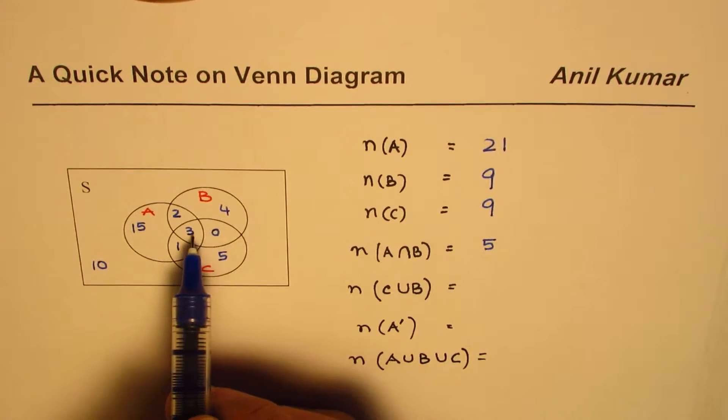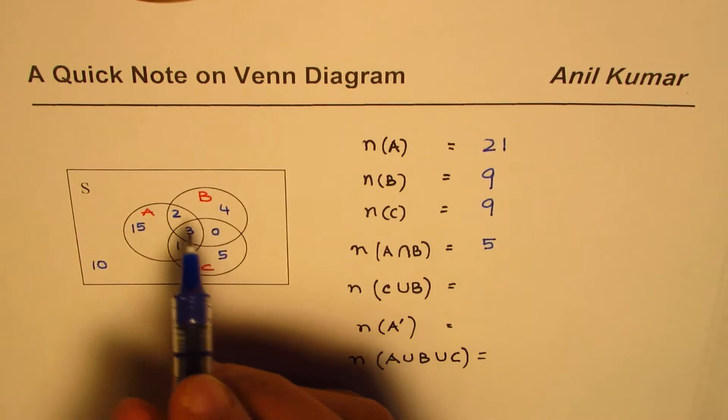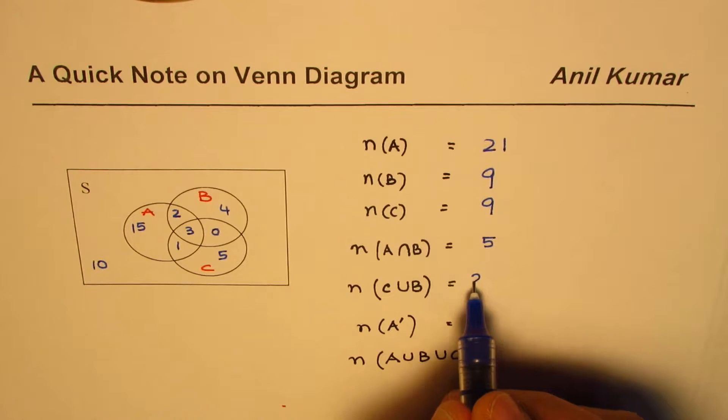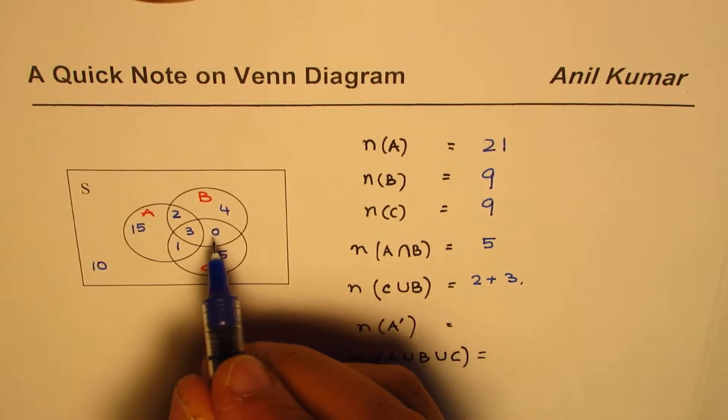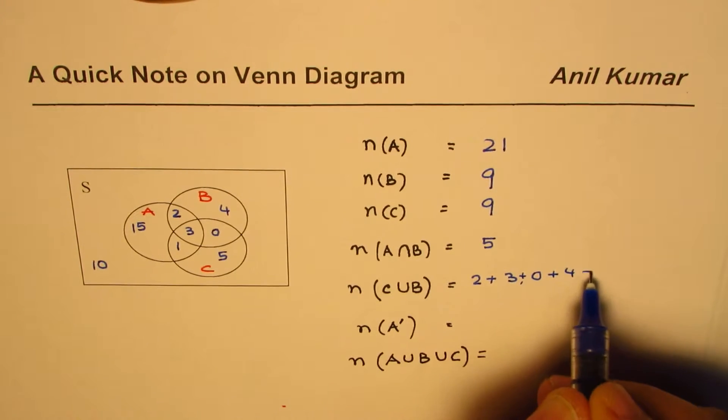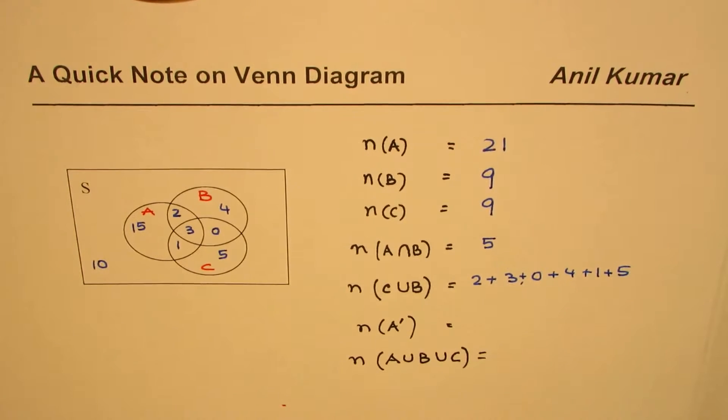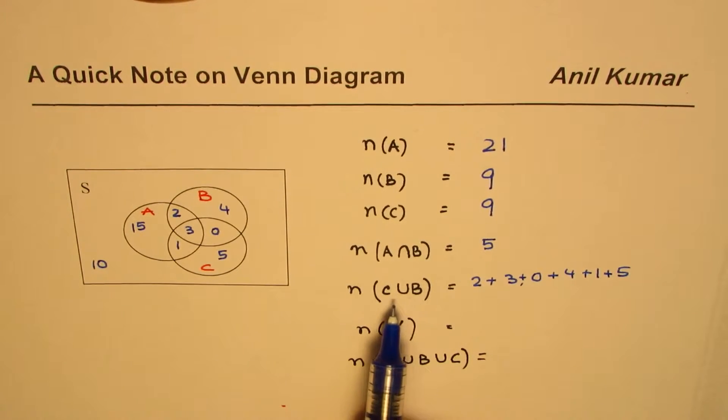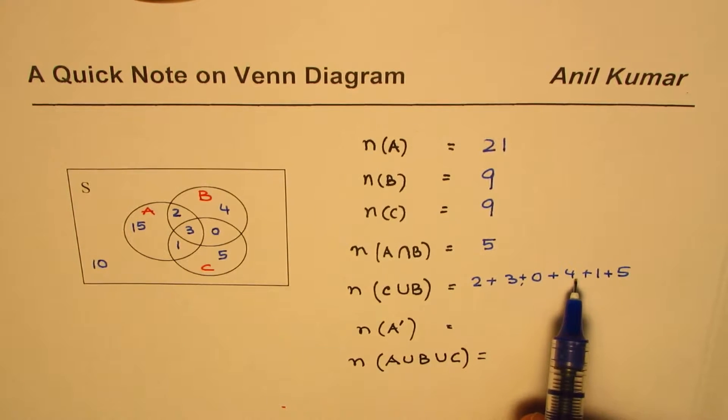So what we will do here is for C union B, we'll add these numbers: 1, 5, 0, 3, 2, and 4. So we'll add these numbers. Let's start with 2, plus 3, and then this 0, plus 4, plus 1, plus 5. So you need to add all these elements to get union B.